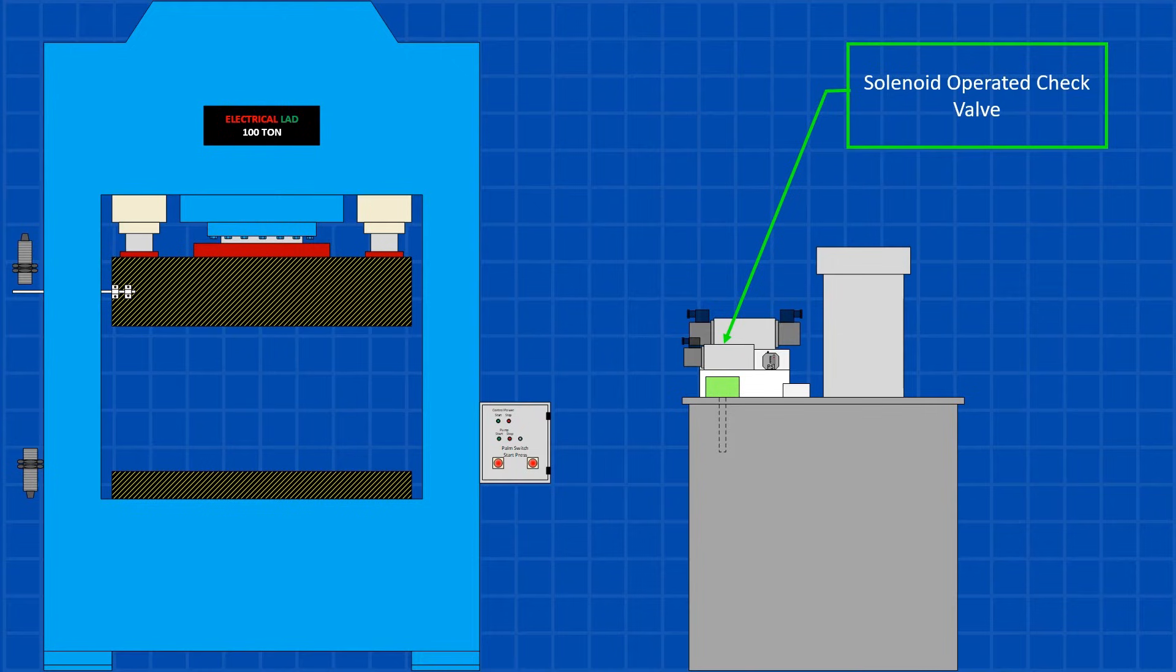The press also uses a solenoid-operated check valve as a safety feature to prevent it from drifting down when in the up position. The solenoid is only energized during the downward movement. Keep in mind, a real press has many other valves, like counterbalance and flow control valves that I won't cover in this example.